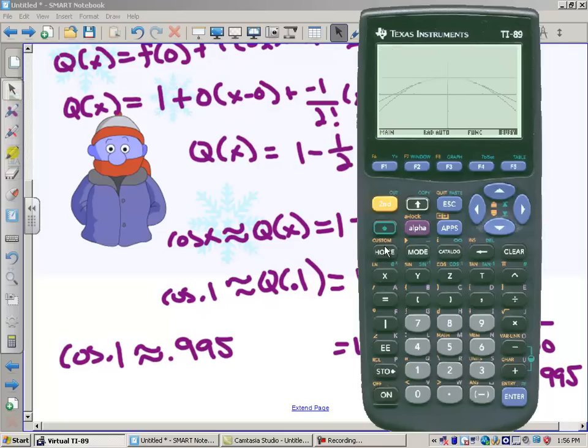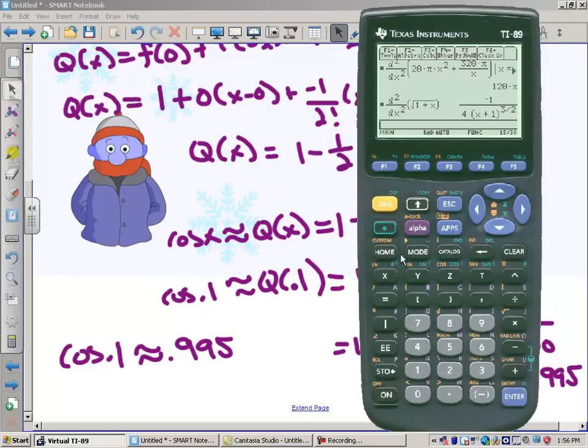So let's go home here and let's find some values here. We think that the cosine of 0.1 is approximately equal to 0.995. Now the tangent line approximation says it's just 1. But what's the quadratic approximation say? It says 0.995.